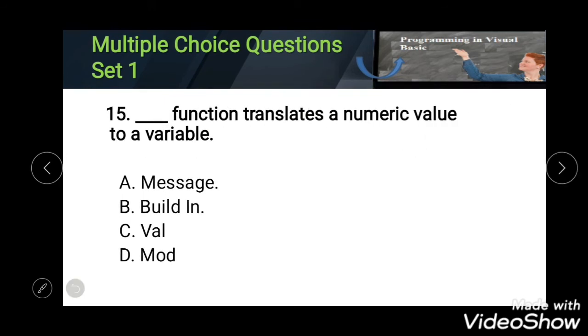Fifteenth: blank function translates a numeric value to a variable. Options: Message, Build In, Val, and Mod. The correct answer is Val.